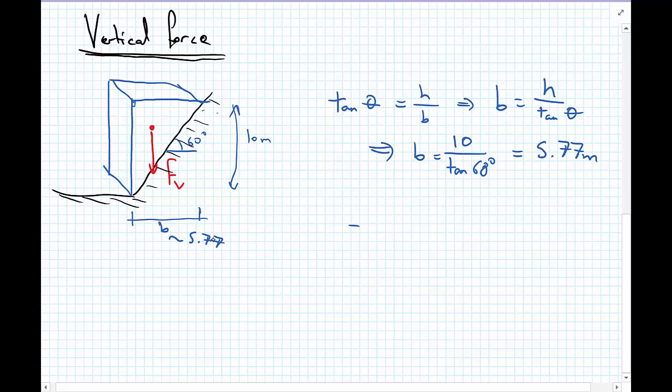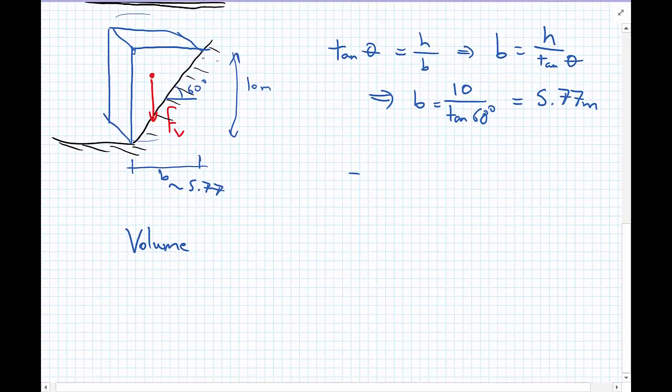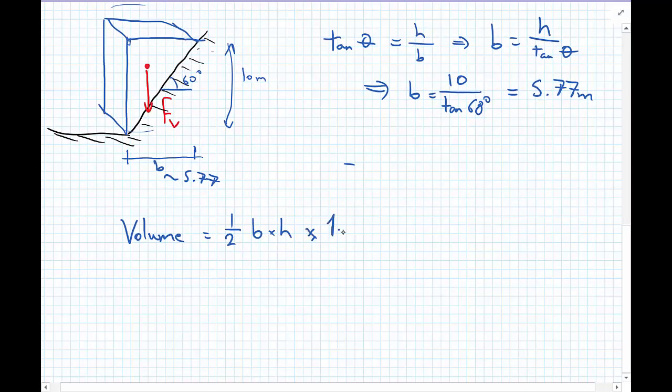So we now go on to calculate the total volume of the water of this triangular shape here. So the volume is the area times the out-of-plane width. So we have one-half of the width times the height, gives us the area of the triangle, then multiplied by the out-of-plane width, which is 1.0 in this case. So that equals one-half times 5.77, multiplied by 10, multiplied by the 1, and equals 28.87 meters cubed.